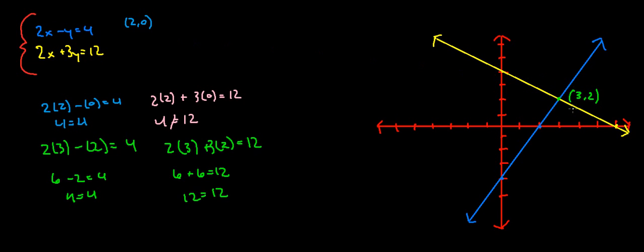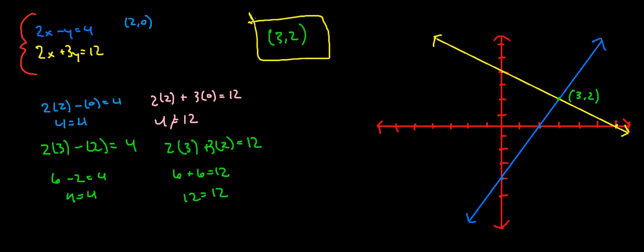So the solution to this system of linear equations is (3, 2). This is how solutions to linear equations work — generally there is going to be only one solution. But there can also be situations where there are no solutions and there are infinitely many solutions.